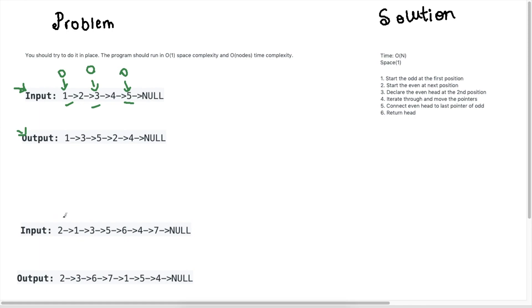If we look at another example, we need to move the values at all the odd indexes and put them at the beginning, and then we end with the even index values. We need to perform this without any additional space — we can't create another linked list and just push items. We need to do it in place at O(n) time complexity.